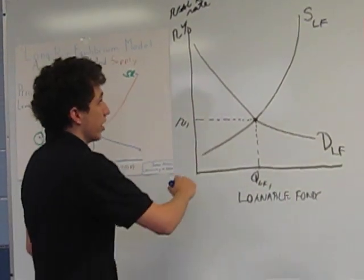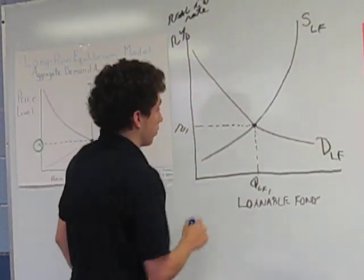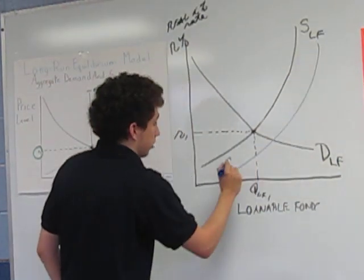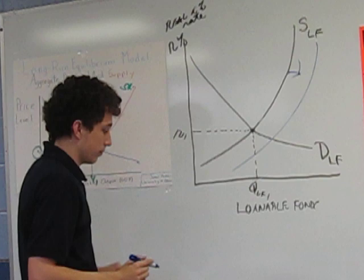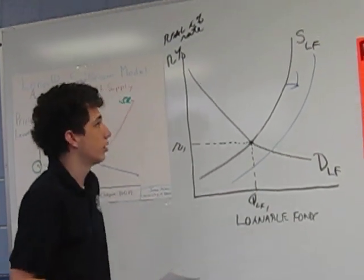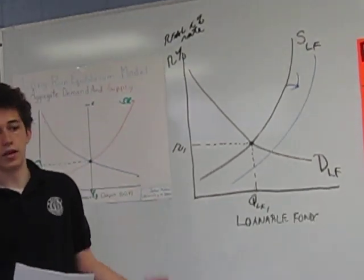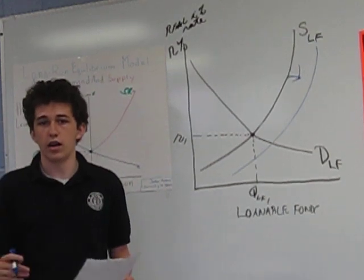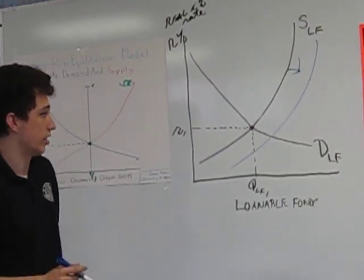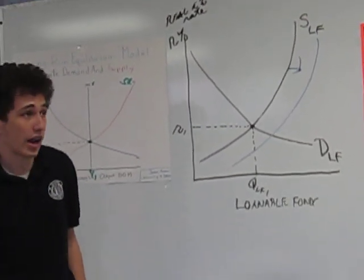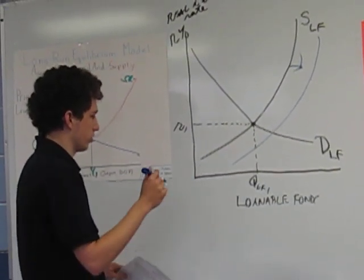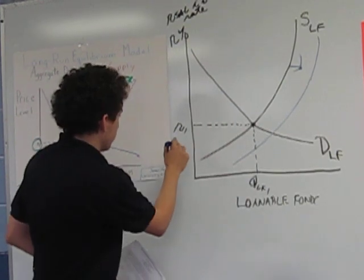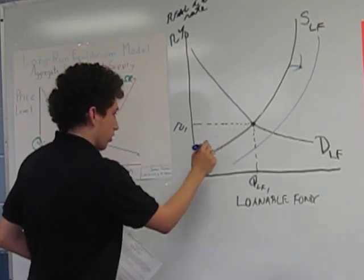It's basically supply and demand. Supply of loanable funds here, demand for loanable funds here. You see an increase in the supply of loanable funds. And why is that? What happened here? The savings increase. So why would that be an increase in supply of funds? Because the amount of savings that you're going to have saved in the bank or the like is basically the quantity that can be loaned out, subtract from the required reserve requirement. So you're going to see a drop in the real interest rate right here.